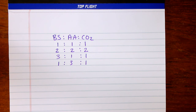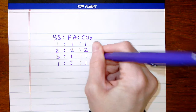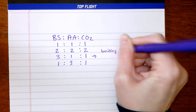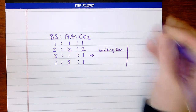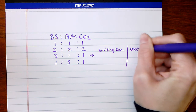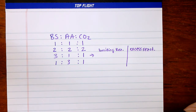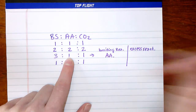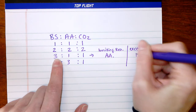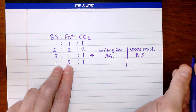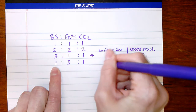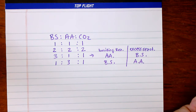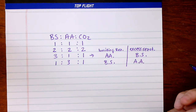We could also have a one-to-three ratio; again we'd still just produce one mole of carbon dioxide. For the three-to-one example, the limiting reactant is acetic acid and the excess reactant is baking soda. For the one-to-three example, the limiting reactant is baking soda and the excess reactant is acetic acid. We want to try to prove that these excess reactants exist.